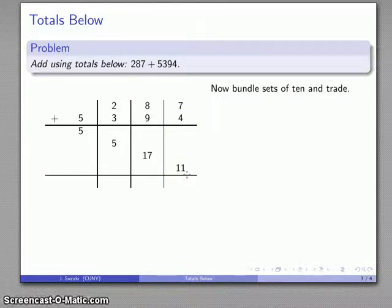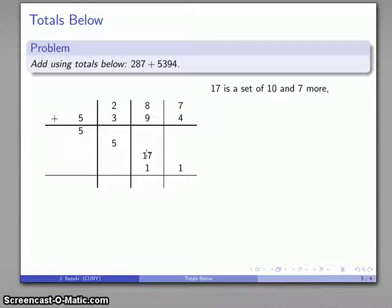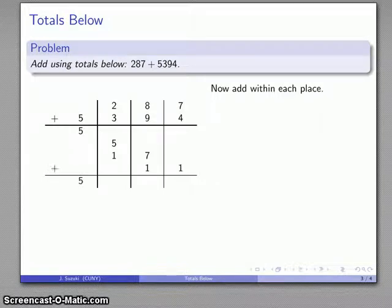So let's see. This 11 is a set of 10 and 1, so that's going to be one more in the next place over. This 17 is a set of 10 and 7 more, so I'll trade the 10 for 1 in the next place over, and there's nothing else I can bundle. And now I'll do my combining. 5, 5 plus 1 is 6, 7 plus 1 is 8, and 1 is 1. And there's my answer.